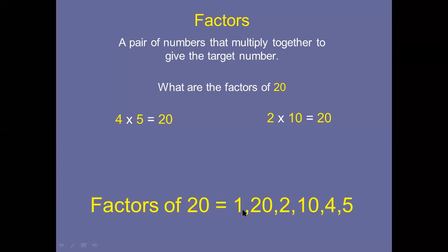So the factors of 20 are: 1, 20, 2, 10, 4, and 5. I hope you are getting an idea of factors. In today's lesson we will just learn how to find factors — nothing else. I will give you a few tips on how to find them.